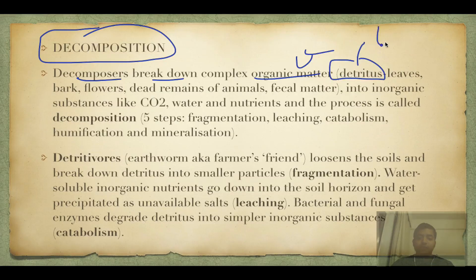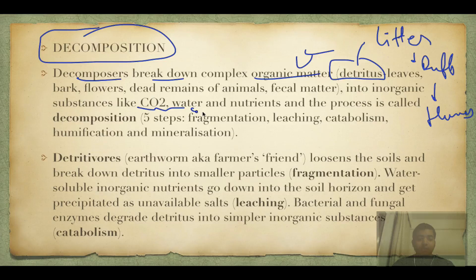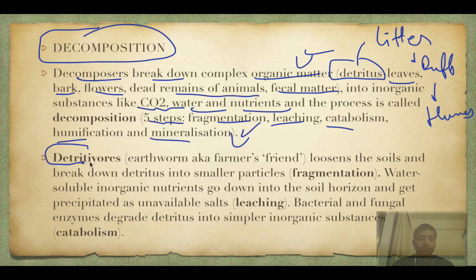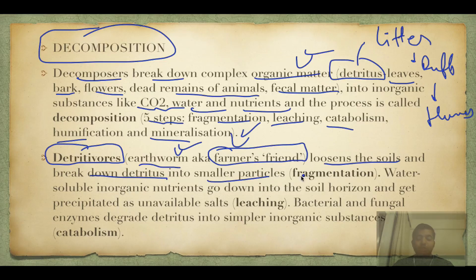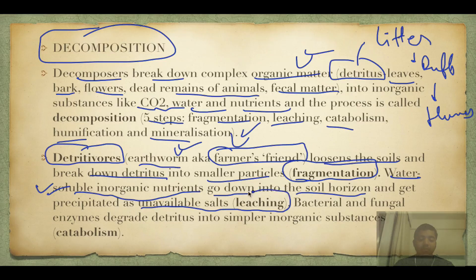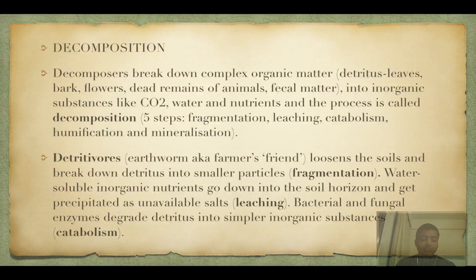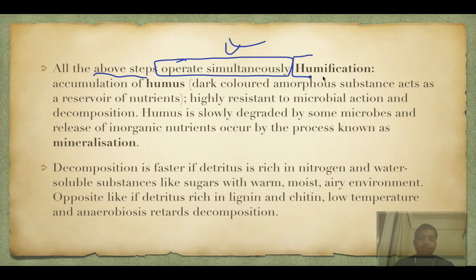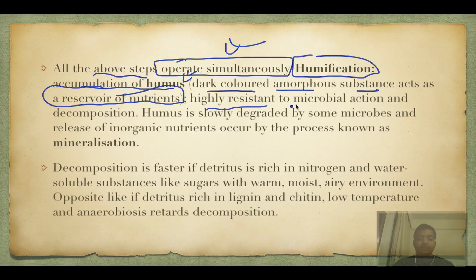Decomposers break down complex organic matter called detritus — which is converted into litter, then duff, then humus. Inorganic substances released include carbon dioxide, water, and nutrients. Detritus includes leaves, bark, flowers, remains of animals, and fecal matter. There are five steps of decomposition: fragmentation, leaching, catabolism, humification, and mineralization. Detritivores feed on detritus — earthworms are the classic example, also called the farmer's friend, as they loosen the soil and break detritus into smaller particles (fragmentation). Water-soluble inorganic nutrients move down into the soil horizon as unavailable salts — this is leaching. Bacterial and fungal enzymes degrade detritus into simpler inorganic substances — this is catabolism.